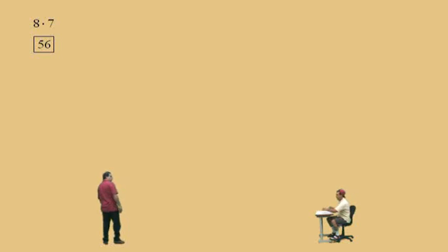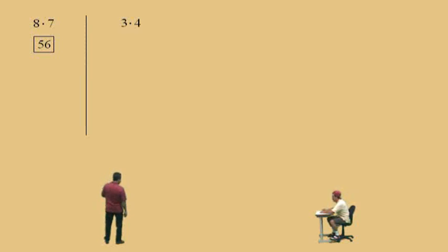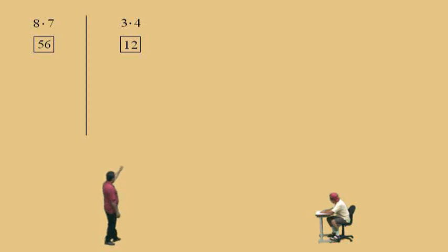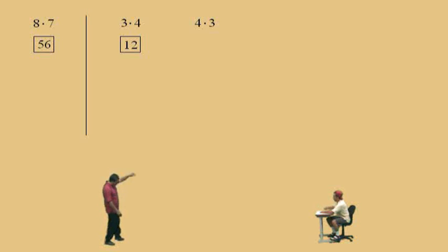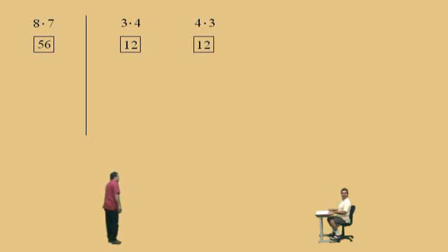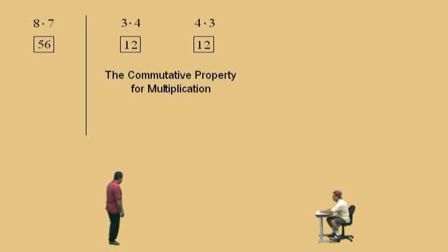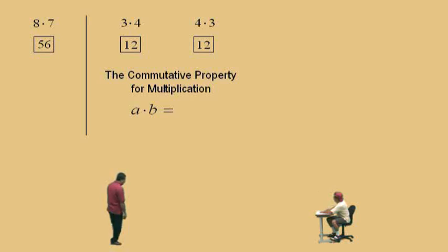Let's look at some properties of multiplication. What's 3 times 4, Charlie? 12. That's right, that's 12. Now look at this next problem: 4 times 3. What property says 3 times 4 is the same as 4 times 3? The commutative property. Very nice there, Charlie. And 4 times 3 is 12.